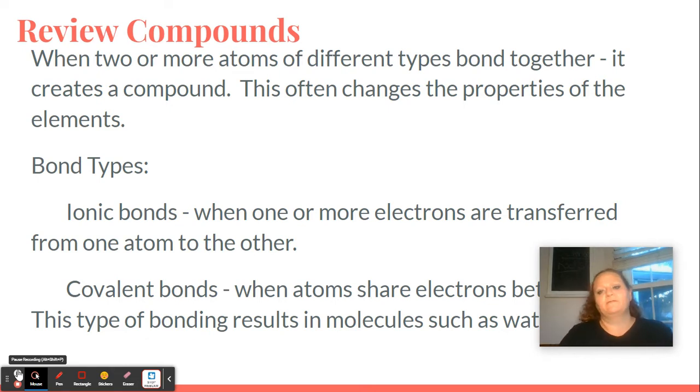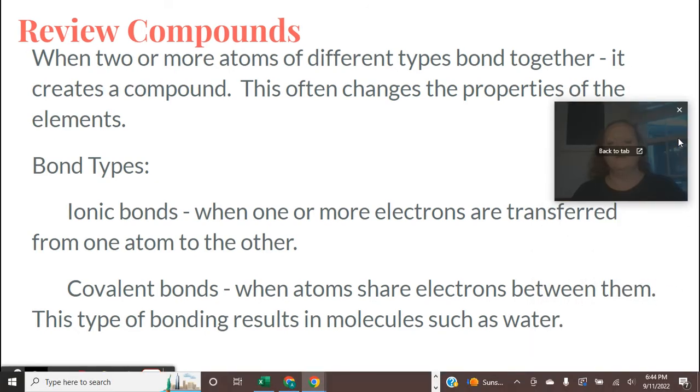So let's take a minute and let's talk about these electrons, because that's actually kind of important. When two or more atoms of different types bond together, we're going to call that a compound. But this is going to change the properties of the elements when they bond together. And a lot of times people are curious as to how these atoms bond together.